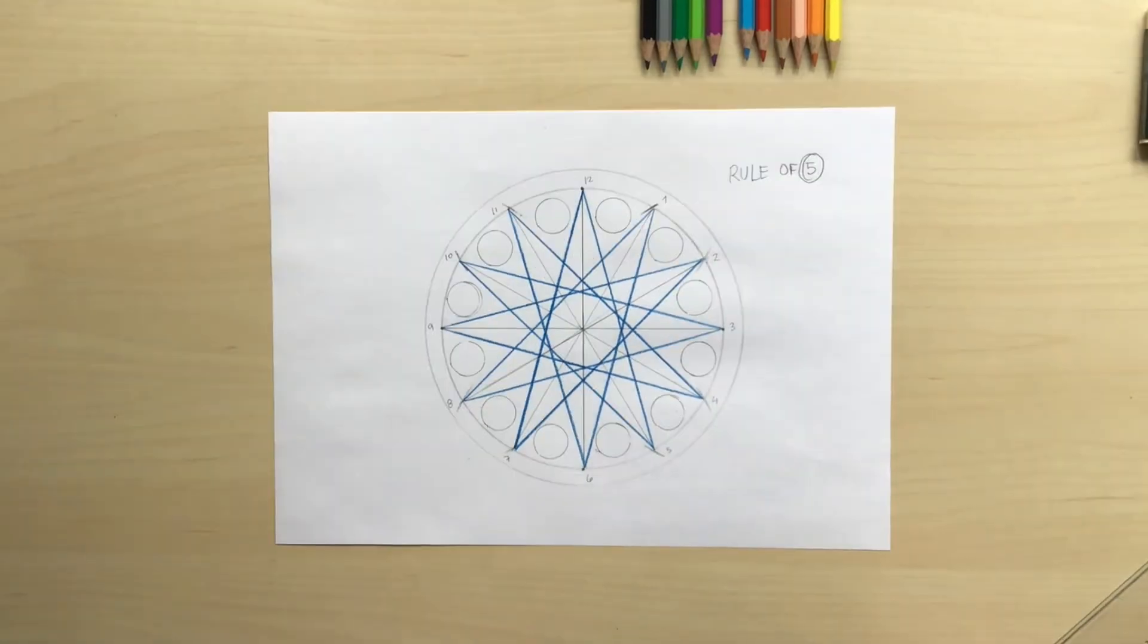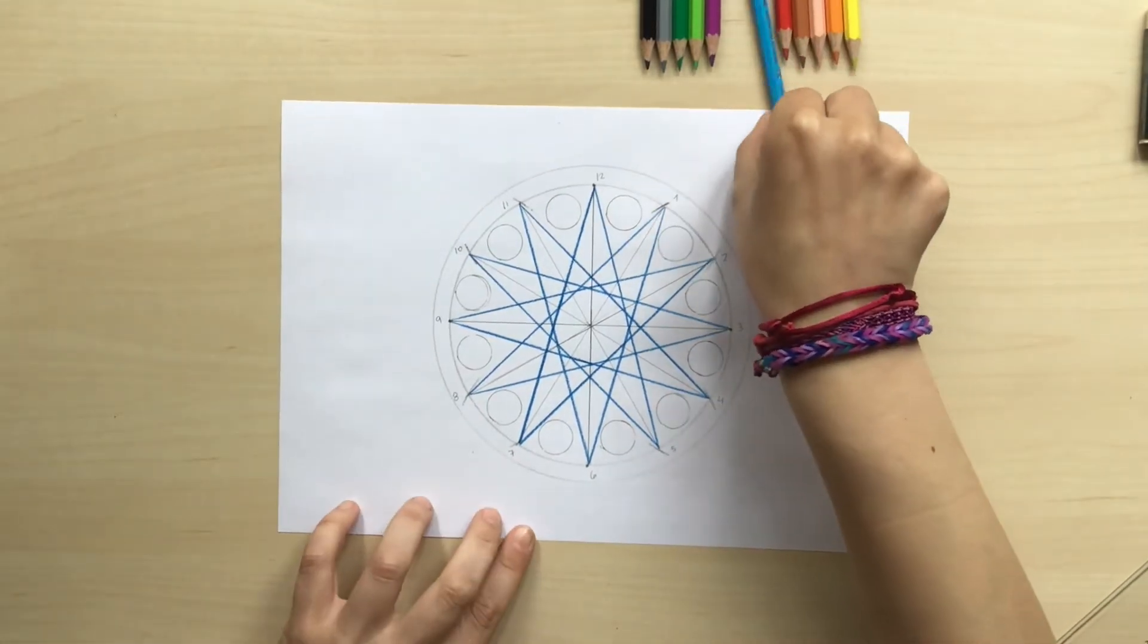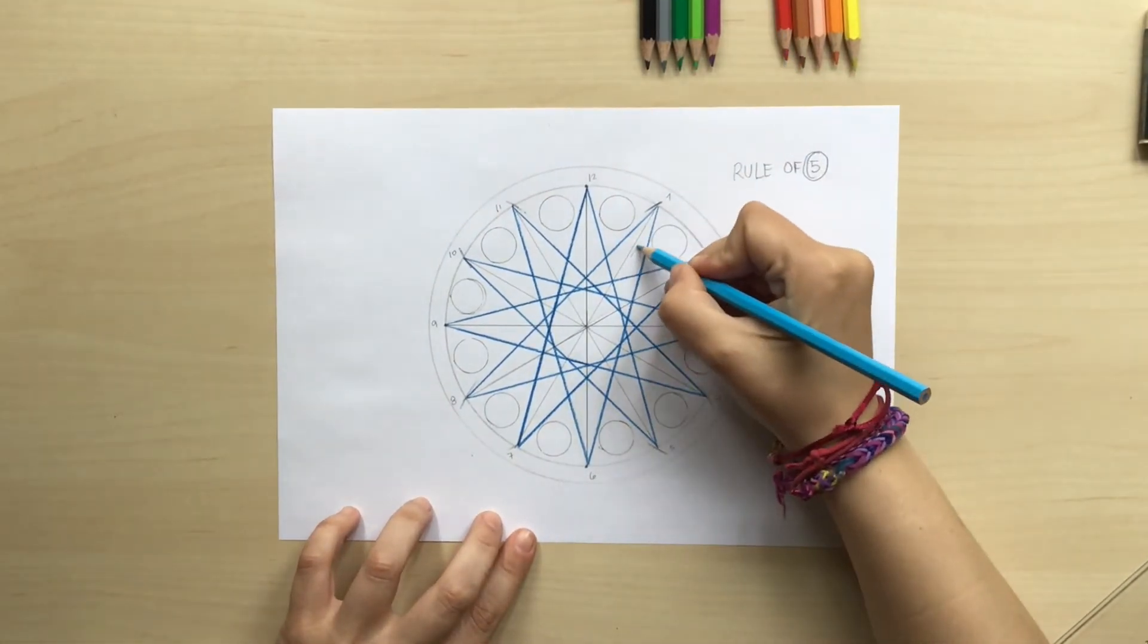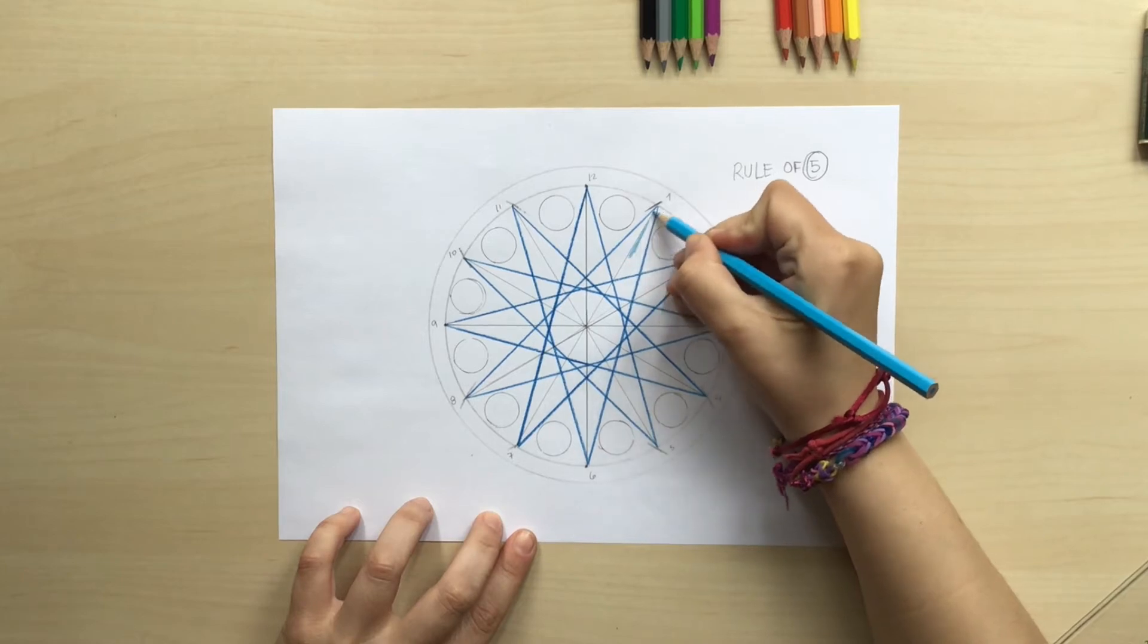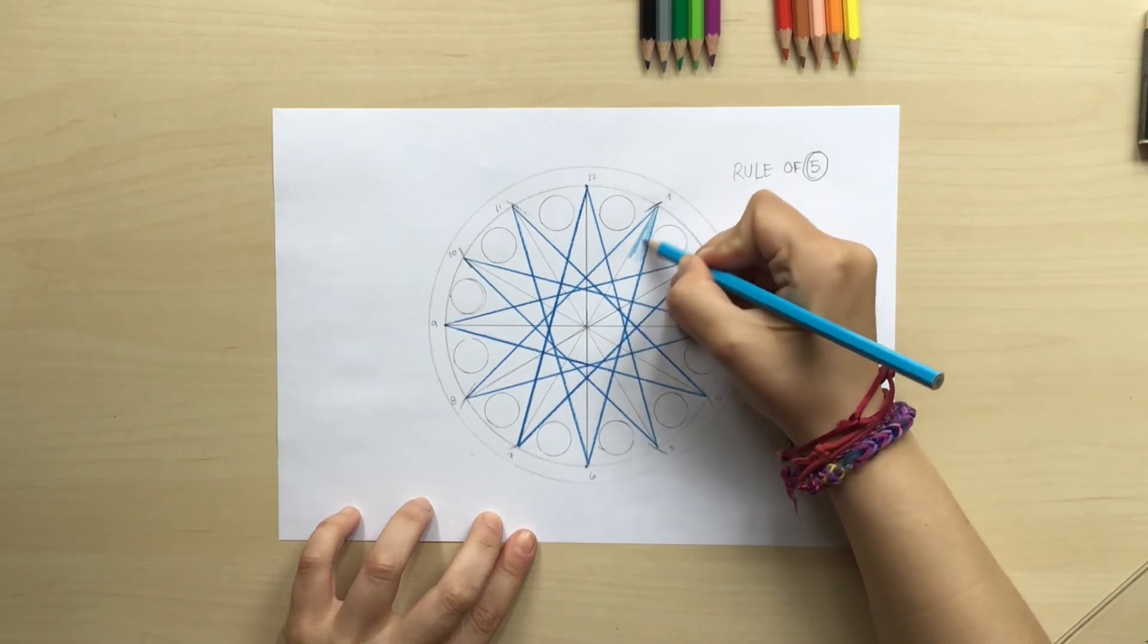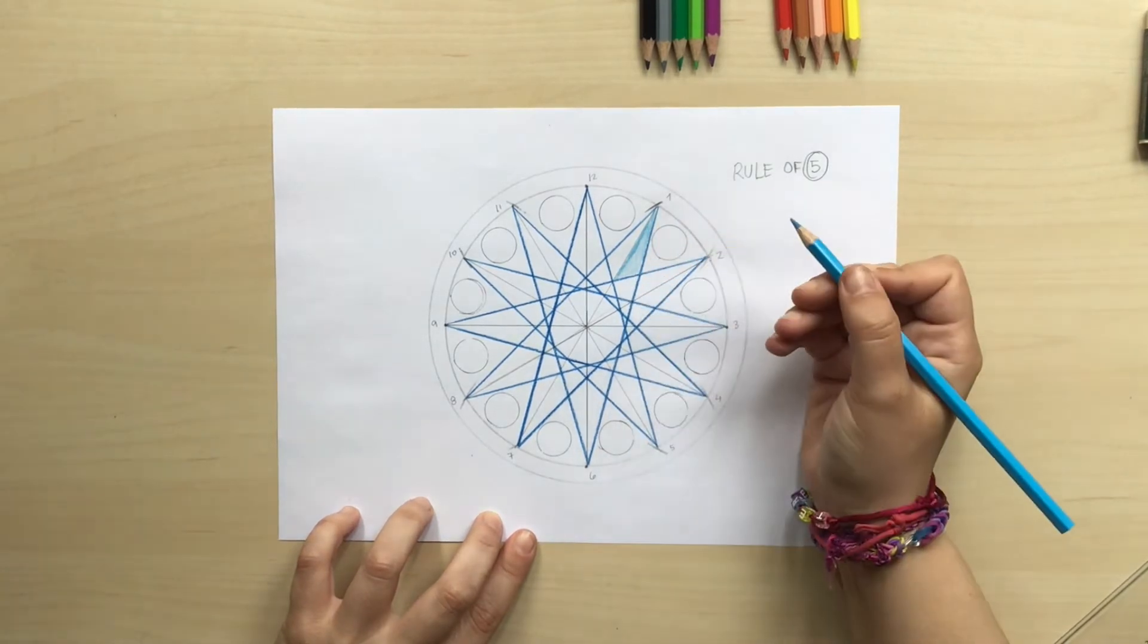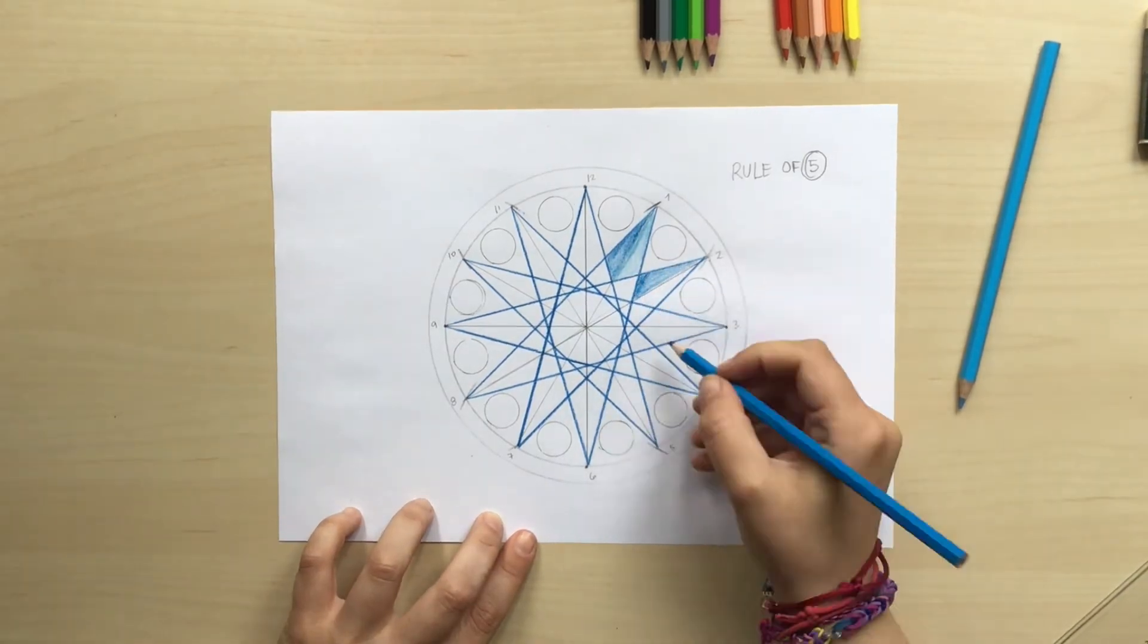Because I think the final result just looks stunning. So now that I have my rose window drawn, what we're gonna do is we're gonna grab our colors. In my case I'm using colored pencils but you can use markers or even watercolors.